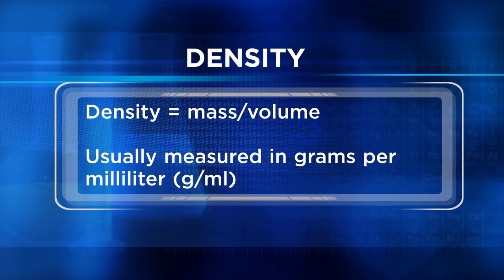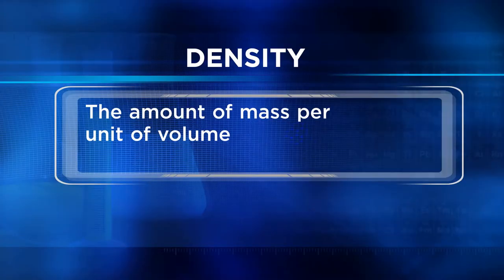Density is a physical property that's particularly important in helping to identify elements and compounds, because each element has its own density. Density equals mass divided by volume, and we often measure density in grams per milliliter. Just know that density is the amount of mass per unit of volume — put more simply, it's how tightly matter is packed together.